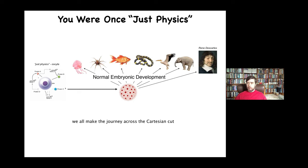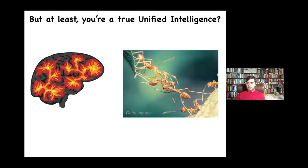It's just a slow, transformational process. But we can think that at least we're a unified intelligence, right? We all feel ourselves as one unified being, and we don't think we're the same as a colony of ants, which is like a traditional collective intelligence. We're unified in some sense.